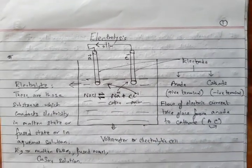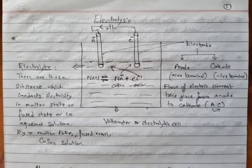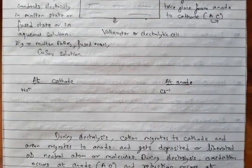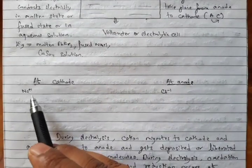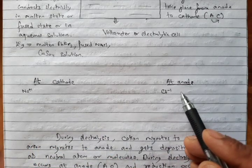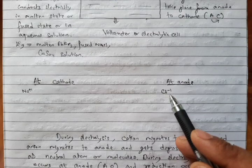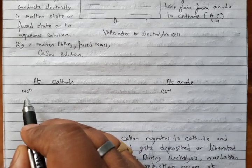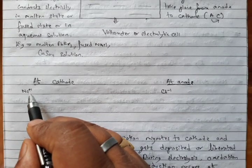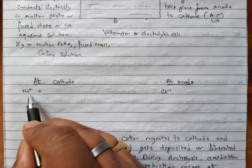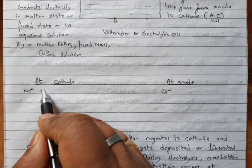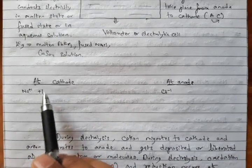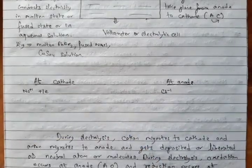Now let us see how the reaction occurs at anode and cathode. At cathode, sodium ion (Na⁺) went, and at anode, chloride ion (Cl⁻) went. Looking at the cathode reaction: the charge is +1, so we write Na⁺ plus one electron (e⁻, because electrons are negatively charged). The charge then disappears and we get neutral Na.